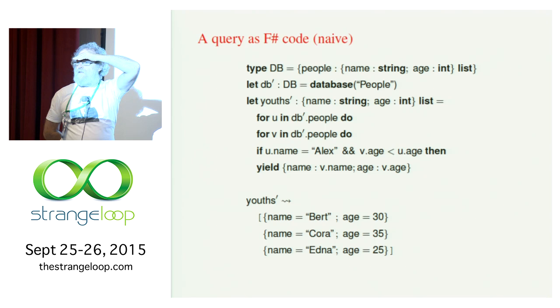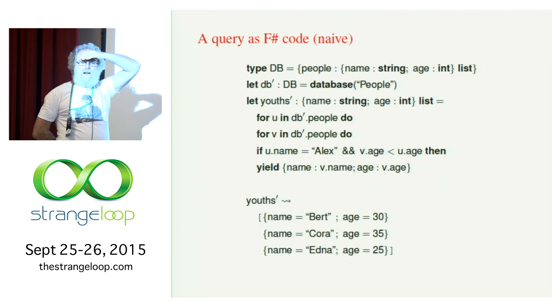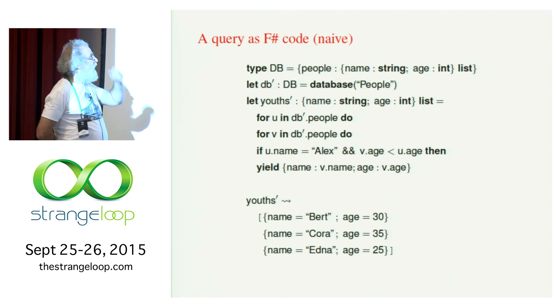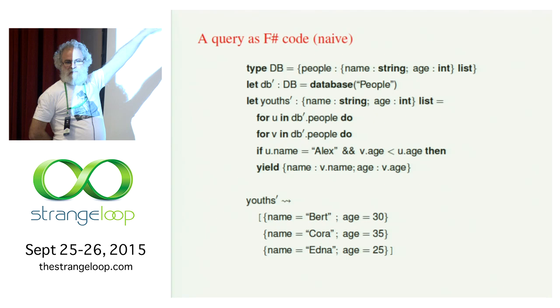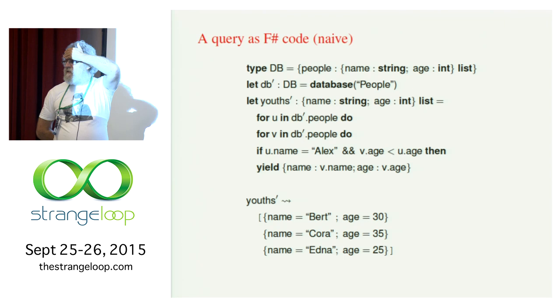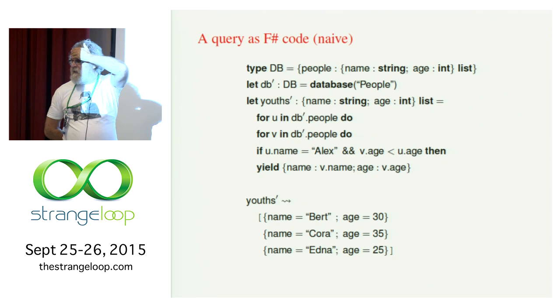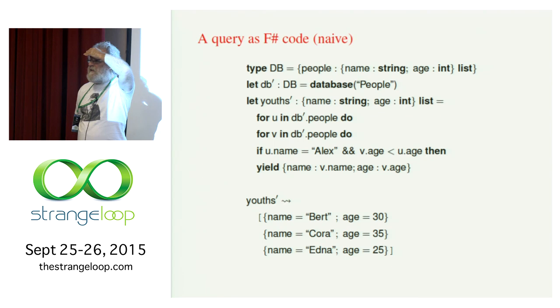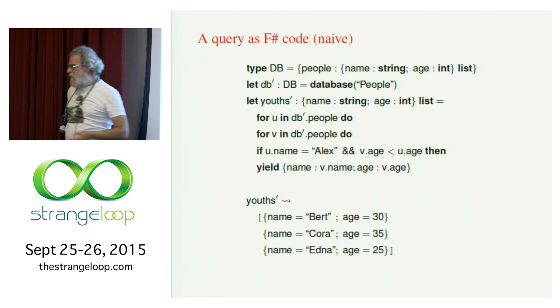Any other problems? This table has six lines — reading that into memory is not a problem. But often databases have terabytes of data. Sometimes instead of six lines you have terabytes and terabytes of data, and reading all that into main memory would not be feasible. So it takes way too much space and time. Other than that, it's perfect. So what are we going to do about it?